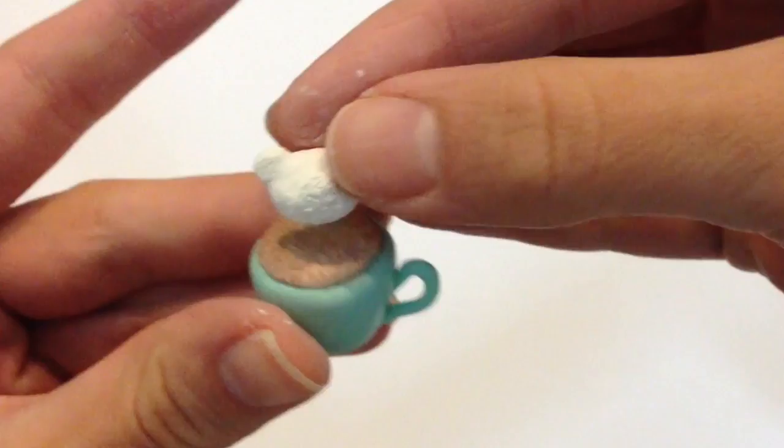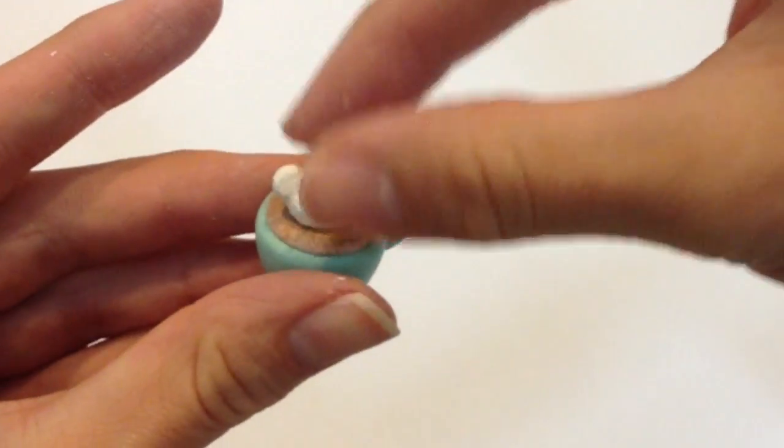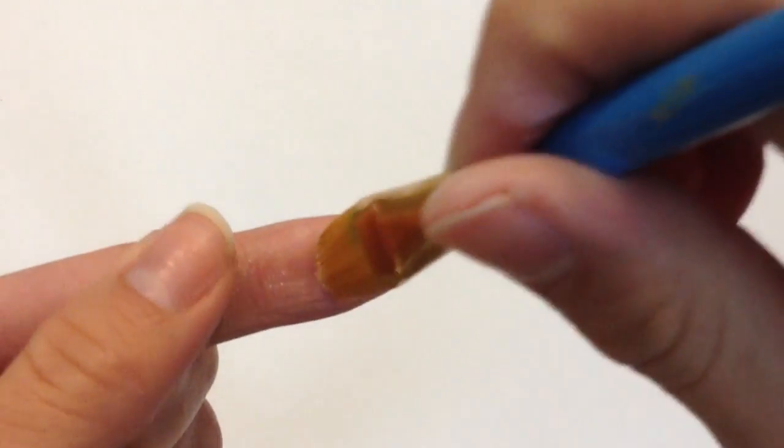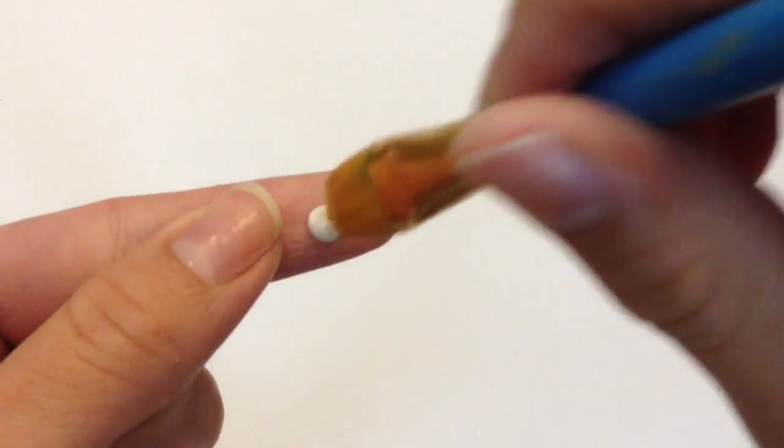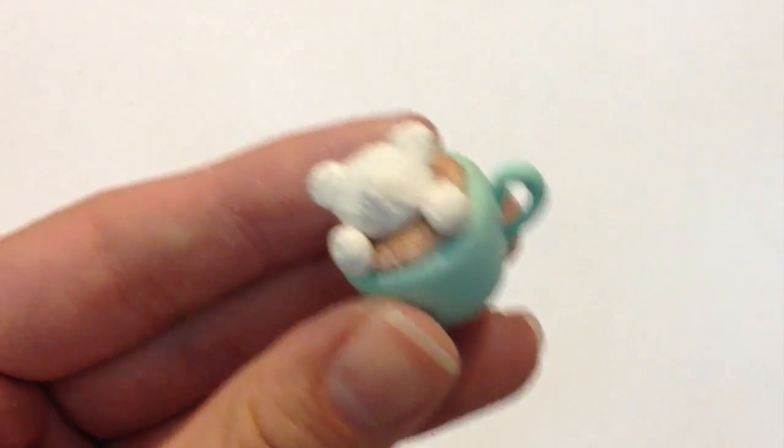This is what my bear looked like when I was done texturing it. Place this bear in the center of your coffee foam. Make sure you leave enough room in the front so that you can form his adorable little paws. To form the paws, take some more white clay, roll this into a small round ball, texture it, and place them right in front of his face.